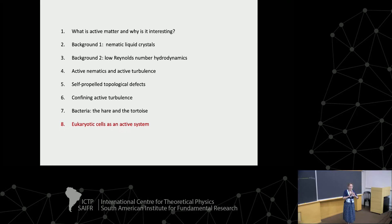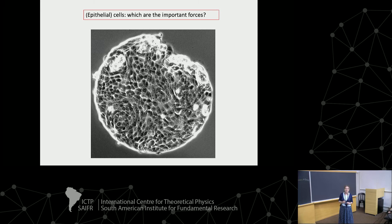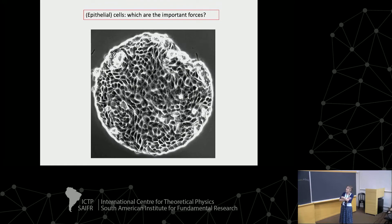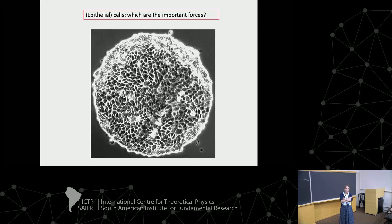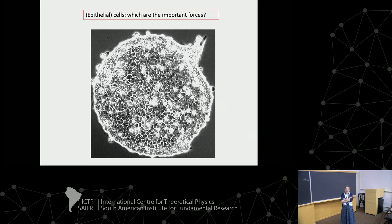Now we're completely switching to a different system: eukaryotic cells. Eukaryotic cells are the squishy ones in your body. This is a two-dimensional layer of cells like those lining the lungs or stomach, and if you look at the dynamics it looks a bit like active turbulence. Our question was: is this active turbulence? Is there anything the same? Can we say anything useful? This evolved into: how do I best model a system like this — what are the important forces?